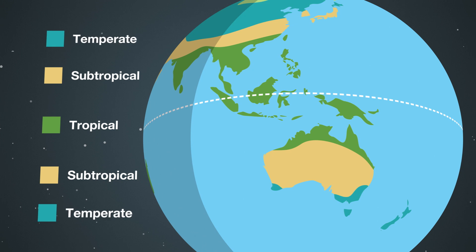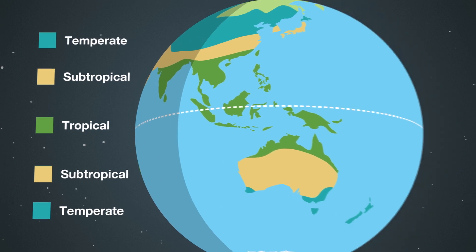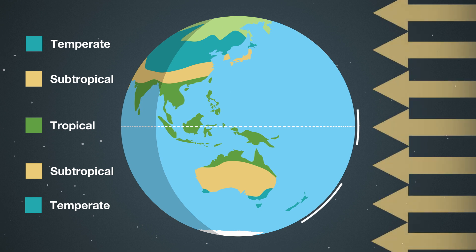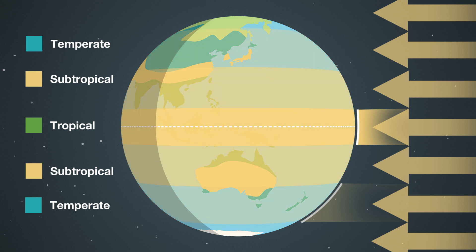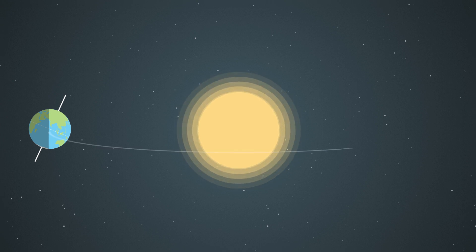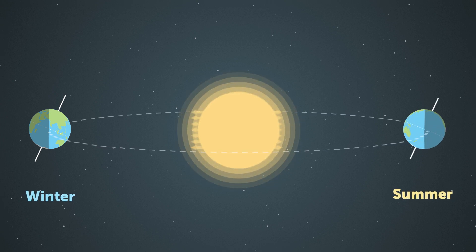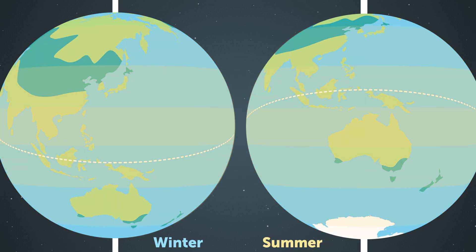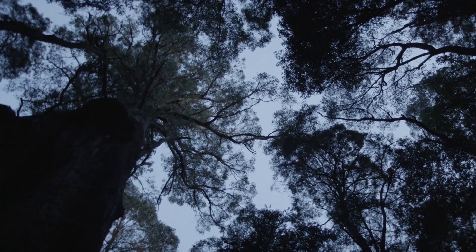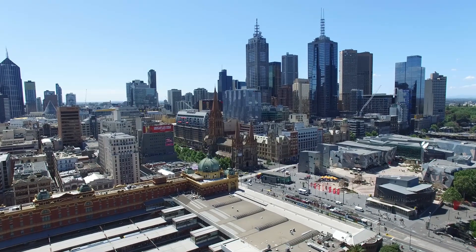The next climate zone is the temperate zone. Because the earth is round, sunlight hits these areas on more of an angle than at the equator. The same amount of energy then has to cover a larger area, which means it's cooler here than at the tropics. And because the earth is tilted as well, as we move around the sun during the year, the temperate zones receive less direct sunlight in winter and more in summer. Regions in the temperate zone like Hobart and Melbourne therefore have distinct seasons, with cold short days in winter and warm long days in summer.